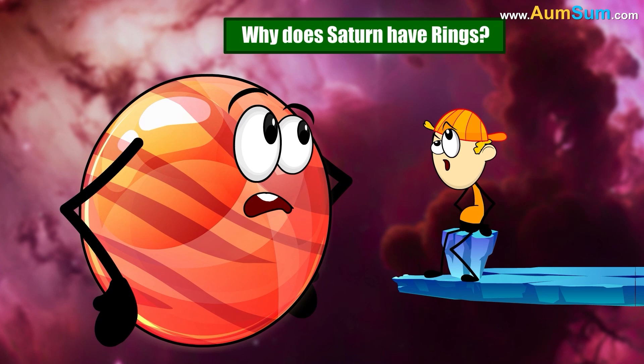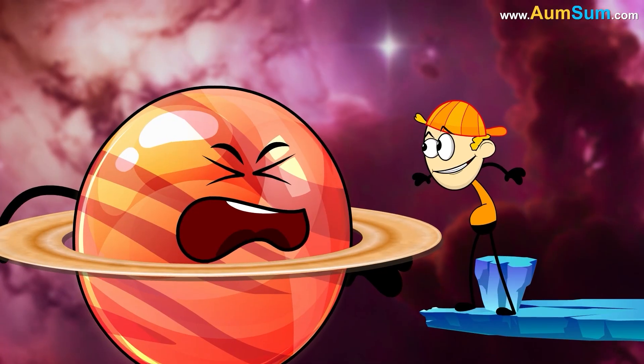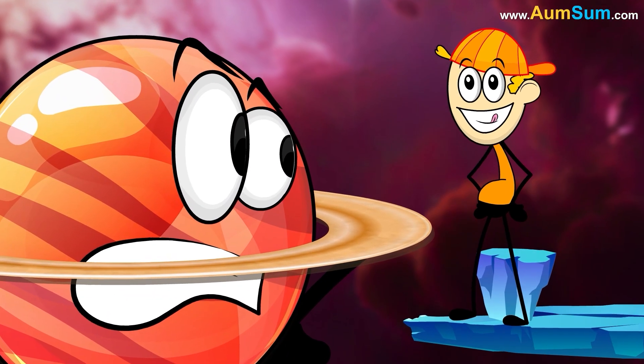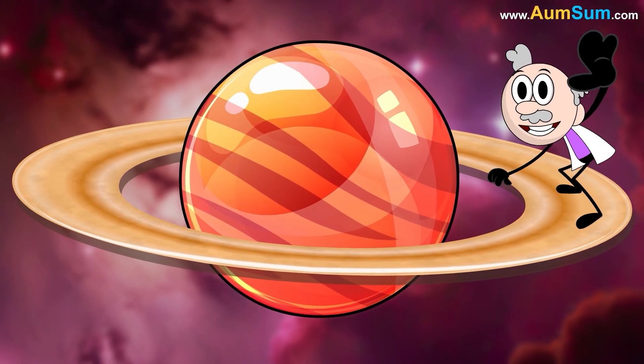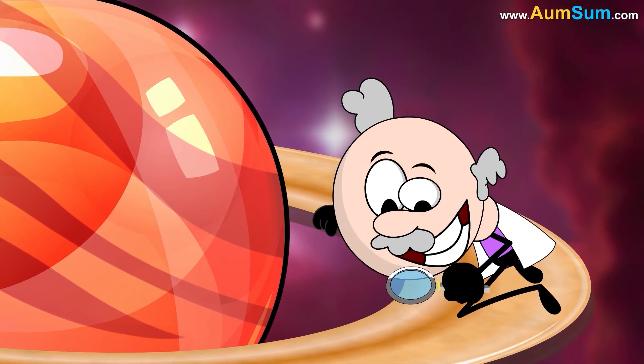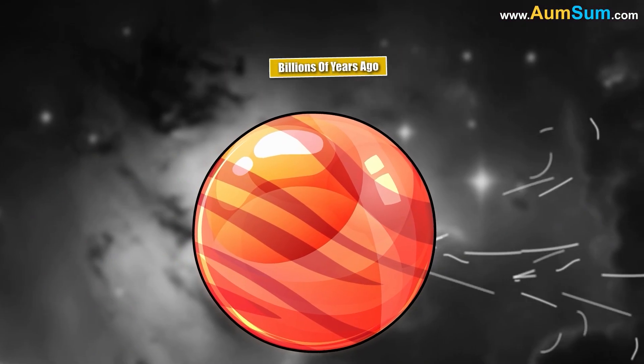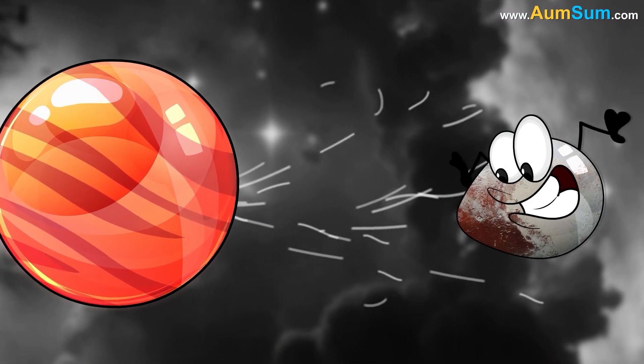Why does Saturn have rings? One theory suggests that Saturn's rings are remnants of celestial bodies like a moon or a comet. Billions of years ago, a celestial body may have got too close to Saturn.